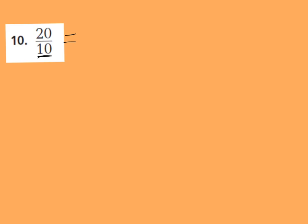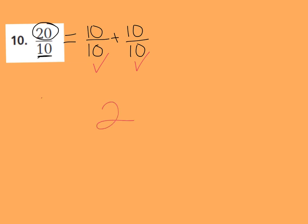Let's look at number 10. Number 10 is 20 tenths. We're going to rewrite 20 tenths as a mixed number by pulling out the wholes and turning it into a sum of fractions. I know that 10 tenths is a whole, so I have 10 tenths. My goal is to get to 20 tenths. 10 tenths plus 10 tenths equals 20 tenths, and I don't have any more left to go. I have 1, 2 wholes — and we don't have a fraction next to our whole number because it goes in evenly.